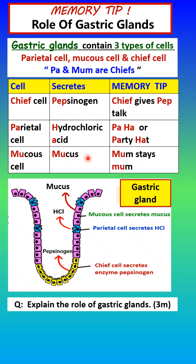By knowing the name of the cell, we should be able to know that the mucus cell secretes mucus. But take note of the spelling — 'mucous' as an adjective has an O in it, but 'mucus' as a noun does not: M-U-C-U-S, without the O.